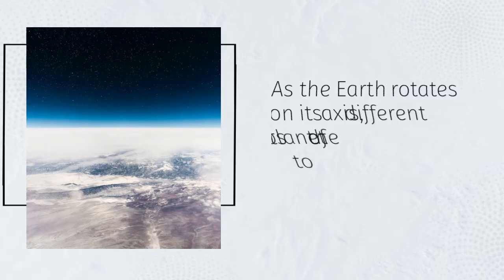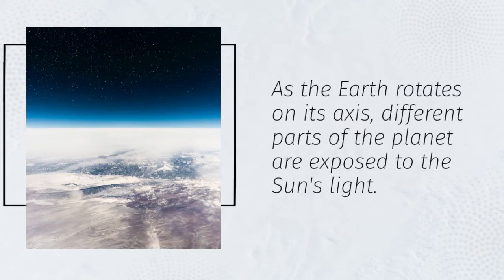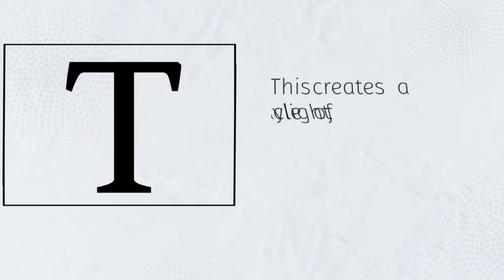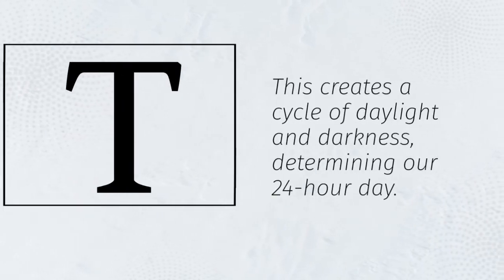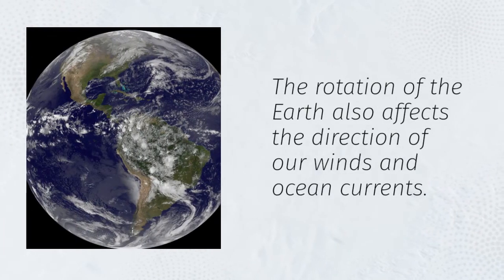As the Earth rotates on its axis, different parts of the planet are exposed to the sun's light. This creates a cycle of daylight and darkness, determining our 24-hour day. The rotation of the Earth also affects the direction of our winds and ocean currents.